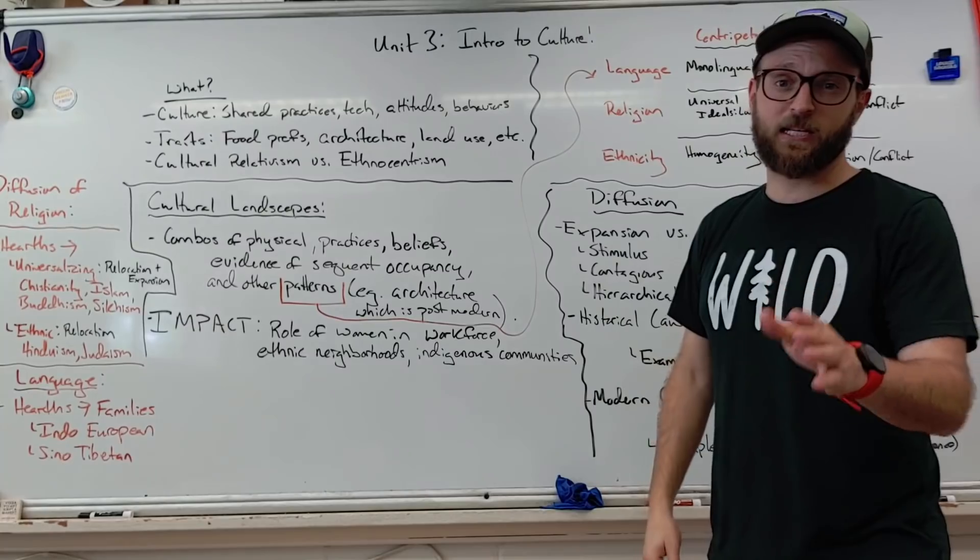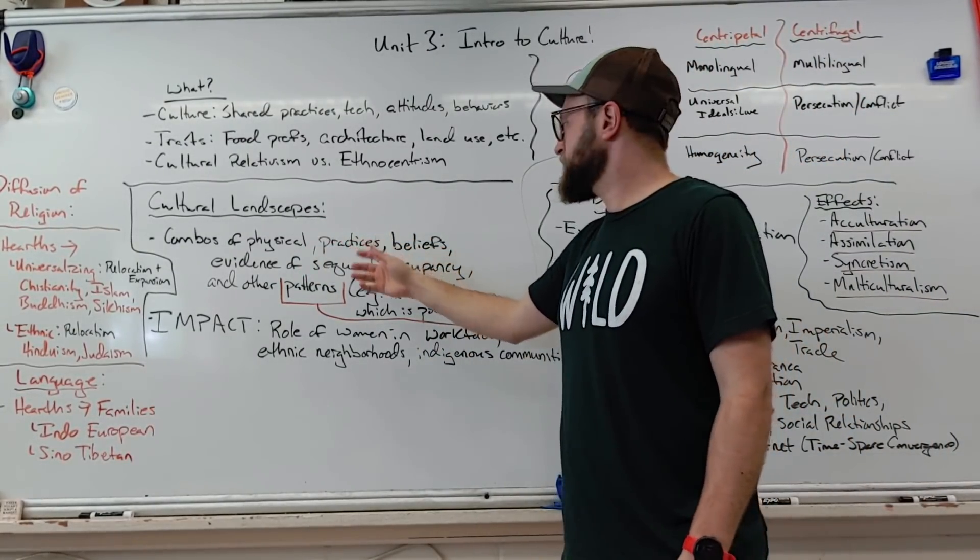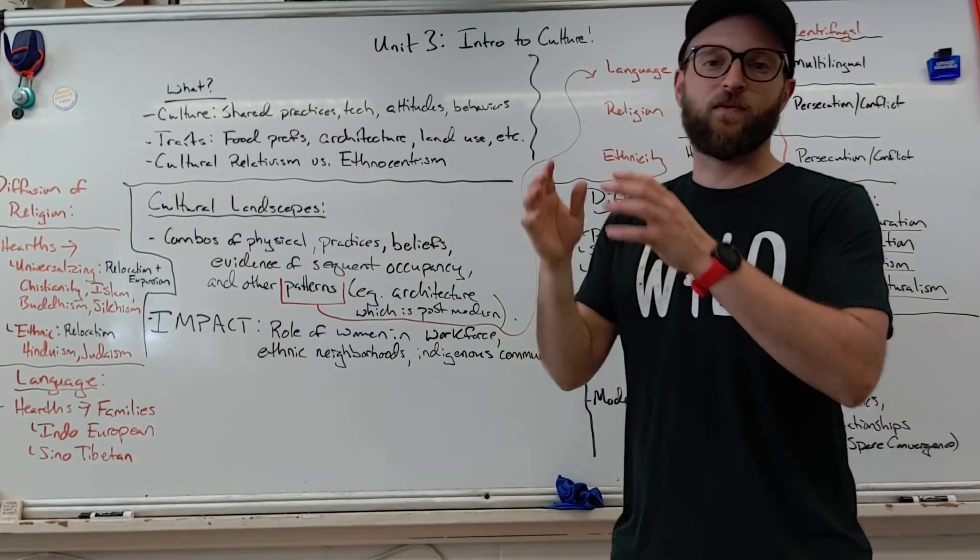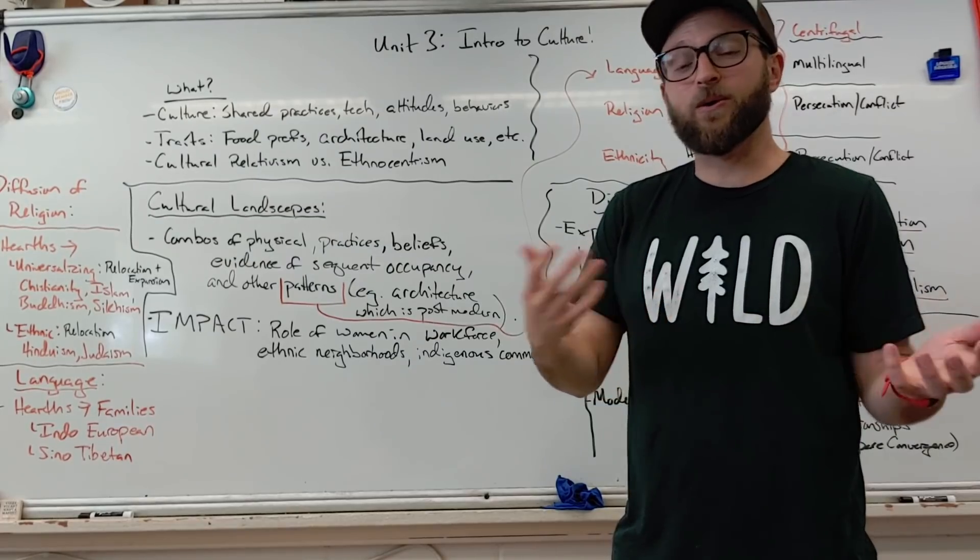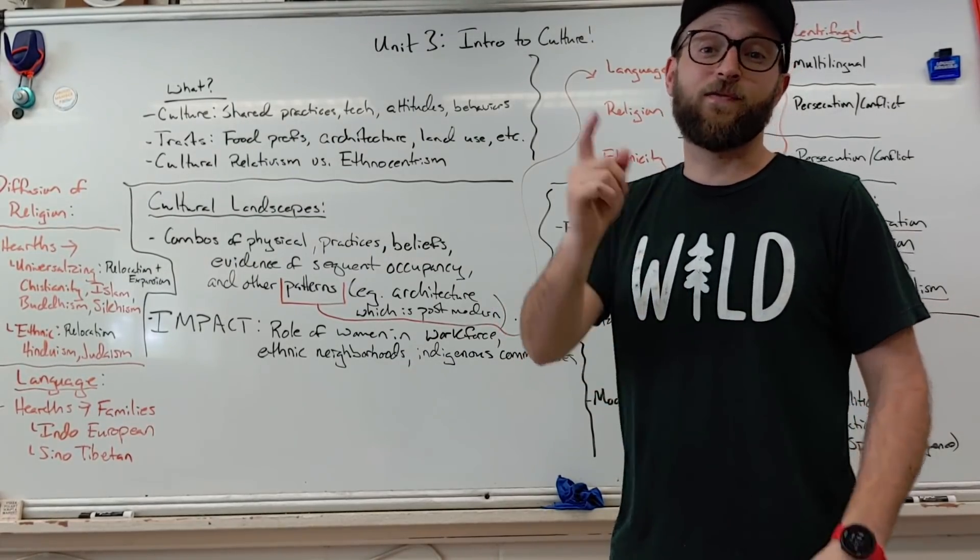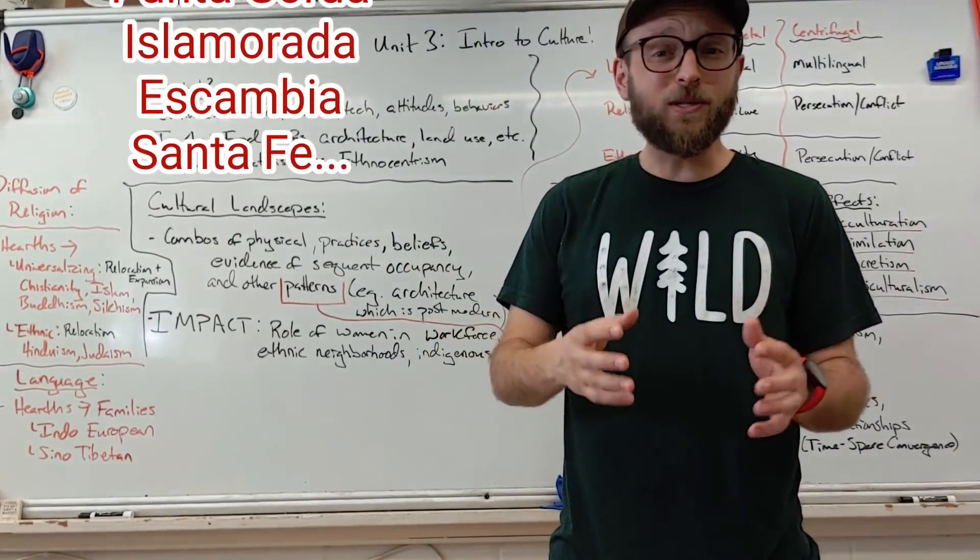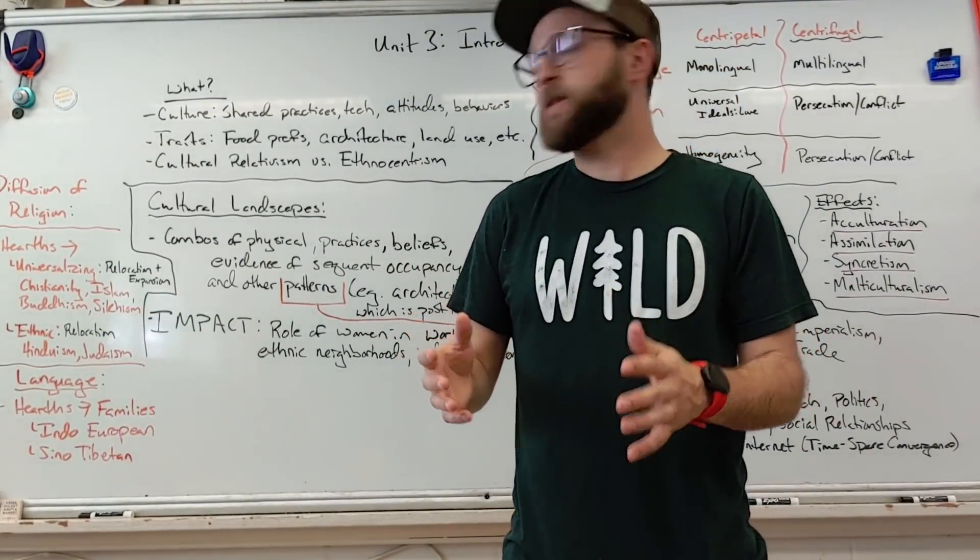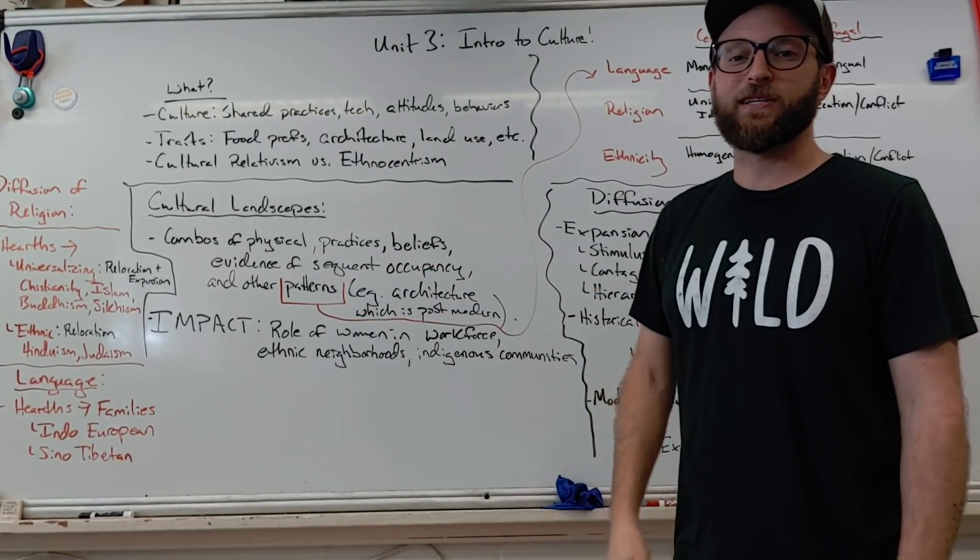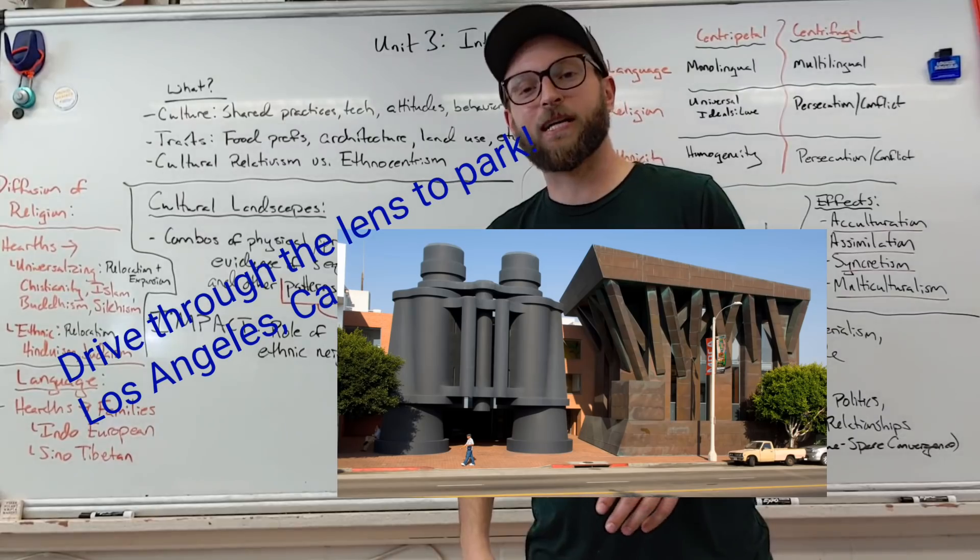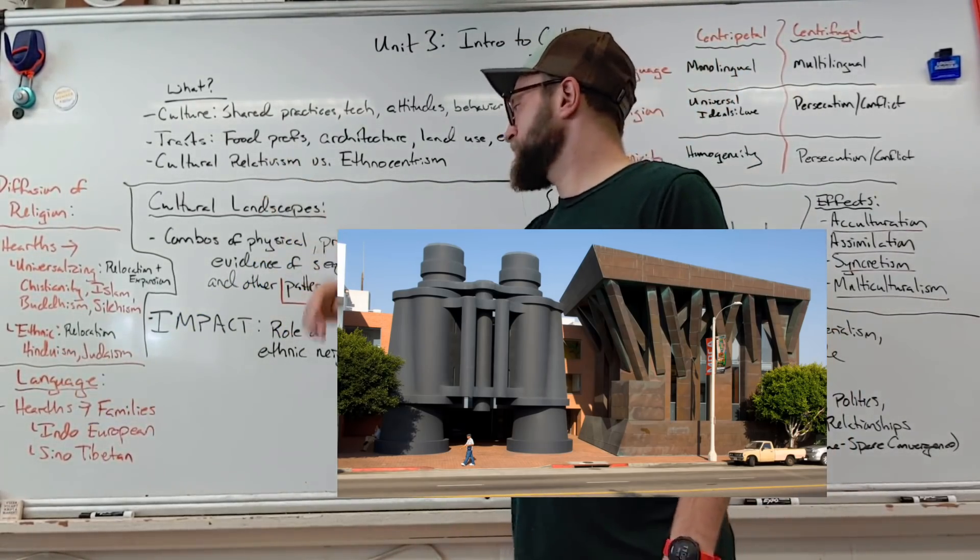Cultural landscapes, the name of your textbook, so obviously somewhat important. It's this combination of physical practices, beliefs, evidence of secret occupancy. If one person lived in your area prior to you, such as indigenous people or a totally different civilization. Fun fact, Florida has been occupied by Spanish speaking populations, I believe equal to or longer than English speaking occupations. Other patterns would be like architecture, post-modern architecture. Remember post-modernism rejects this idea that we can be unbiased because of our worldview and that cultural relativism.